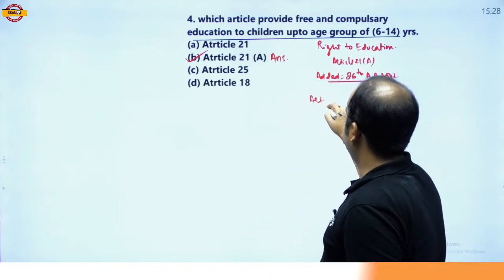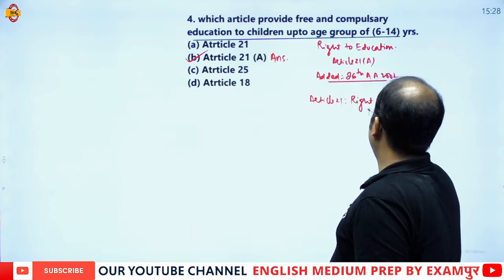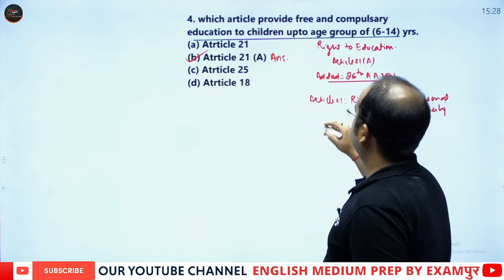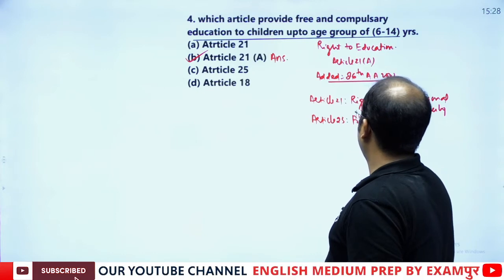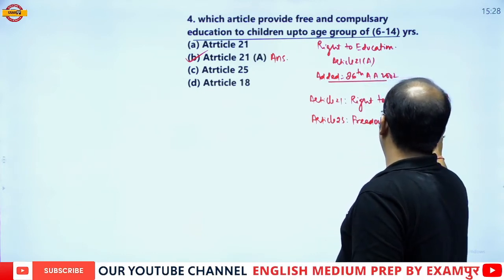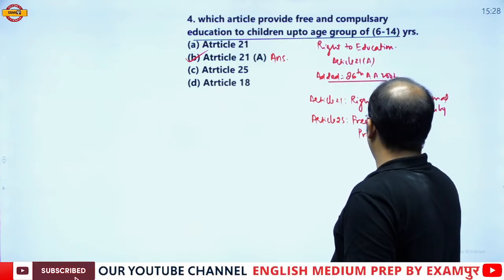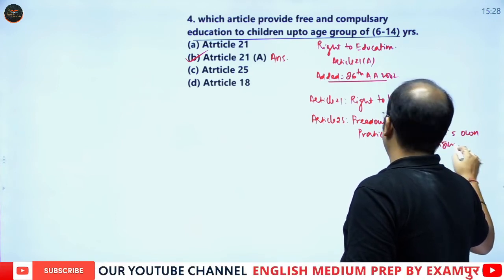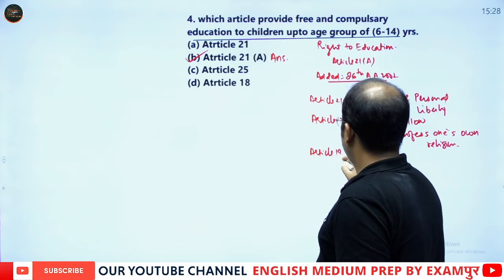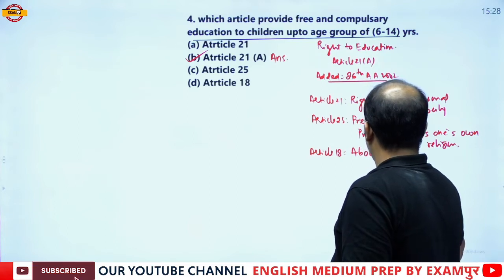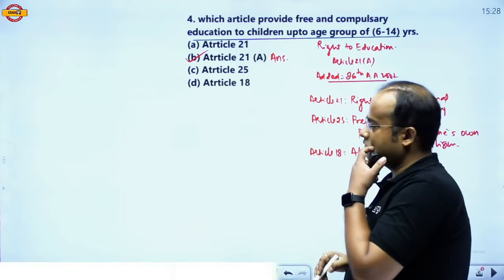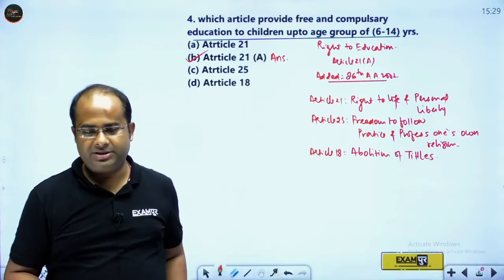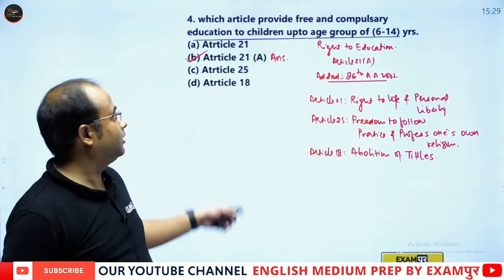Article 21 is the Right to Life and Personal Liberty. Article 25 covers freedom to follow, practice, and profess one's own religion. Article 18 is the abolition of titles. The correct answer is option B, that is Article 21A, added through the 86th Amendment Act, 2002.